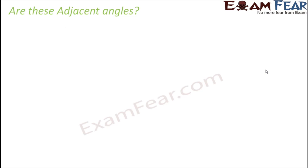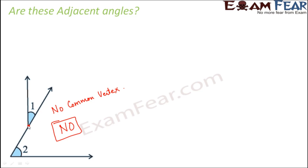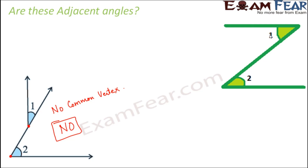Now let us look at some examples and determine whether they are adjacent or not. First: do you think angle 1 and angle 2 are adjacent? No, because they do not satisfy the first criteria — they do not have a common vertex. Second: here also, angle 1 and angle 2 are not adjacent because the vertex for angle 1 is different from the vertex for angle 2, so again no common vertex. Third: here we do see a common vertex, but for angle 1 the arms are these two, and for angle 2 the arms are different — we do not have a common arm. So these are also not adjacent angles.